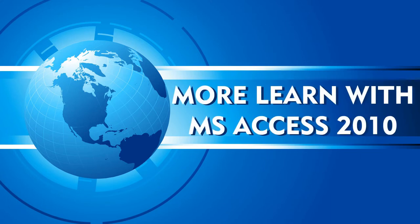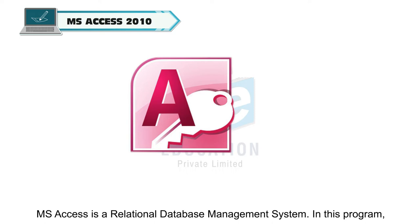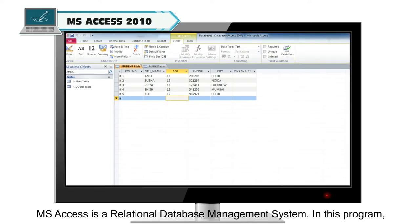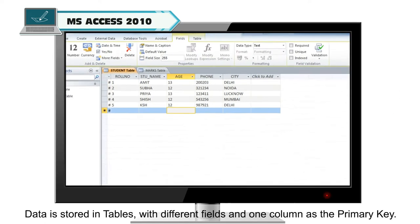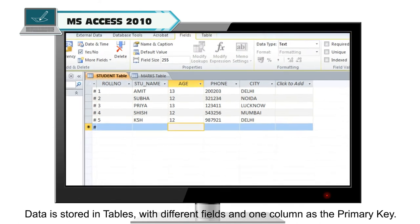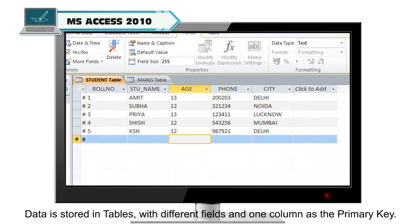MS Access is a relational database management system. In this program, data is stored in tables with different fields and one column as the primary key.